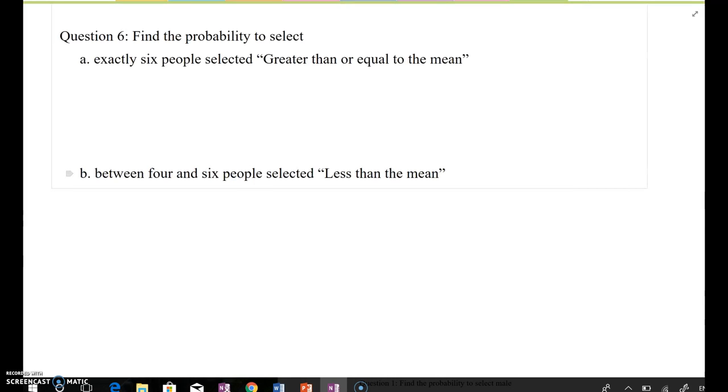Now let's think about question number six. Find the probability to select exactly six people selected greater than or equal to the mean value. So this is our target value here.